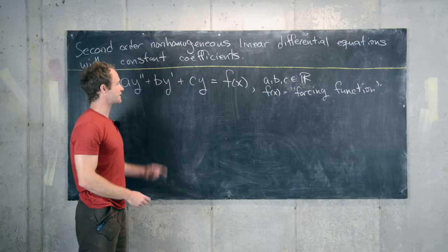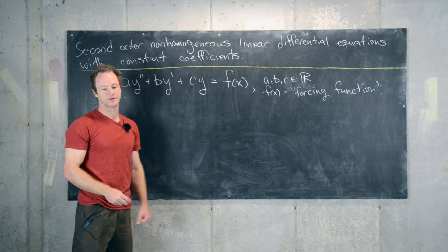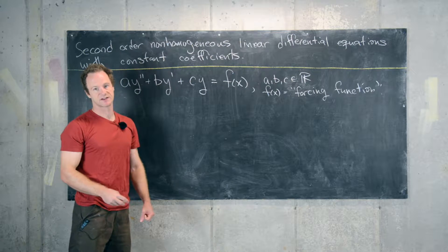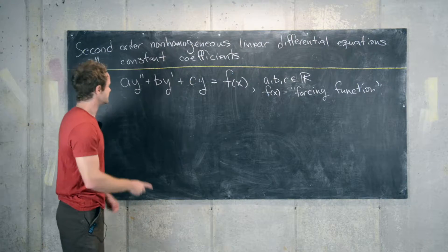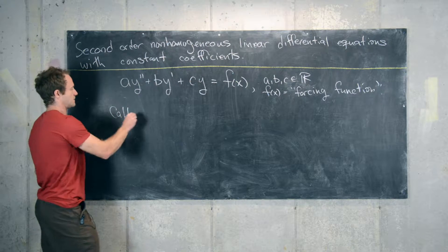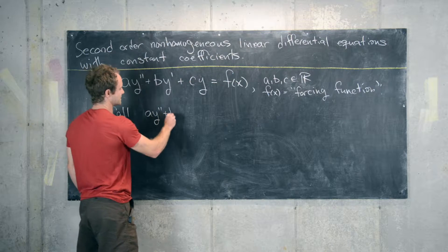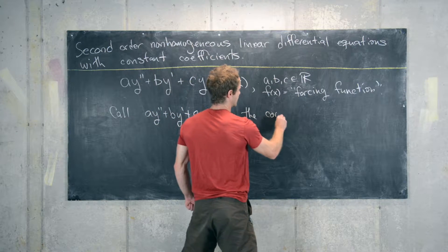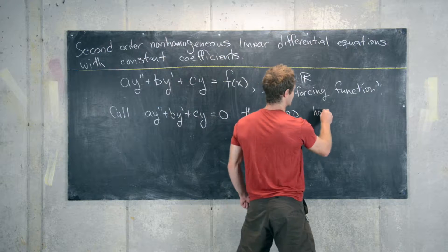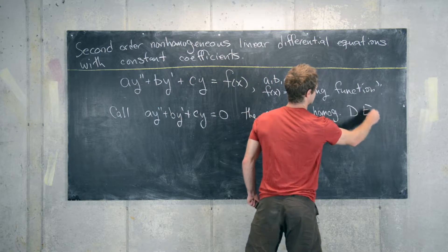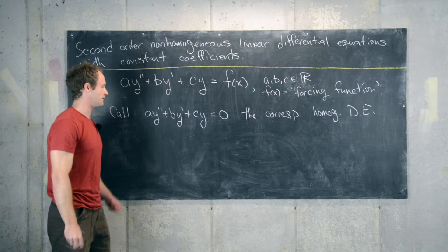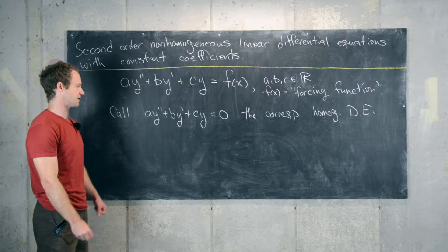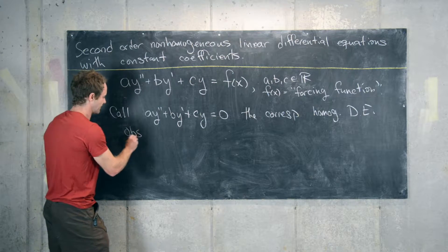Now the first thing we'll do is observe that even though this is a non-homogeneous differential equation, the solutions to the corresponding homogeneous differential equation are also important. So let's call a y double prime plus b y prime plus c y equals zero the corresponding homogeneous differential equation, which we know how to solve. It has something to do with the roots of this polynomial — we'll look at an example at the end, but we know how to solve this.